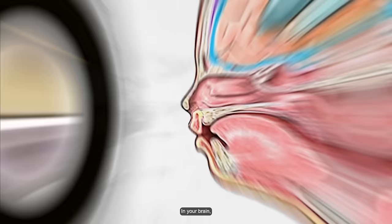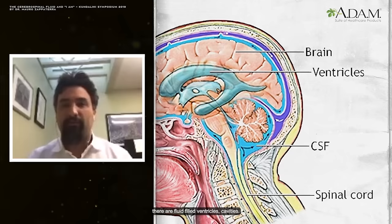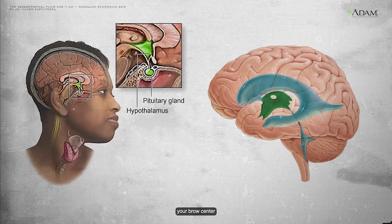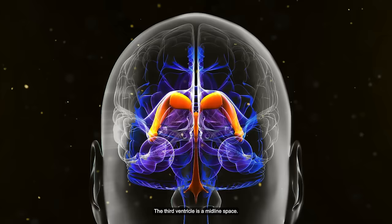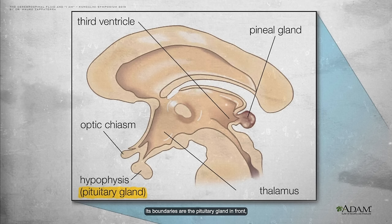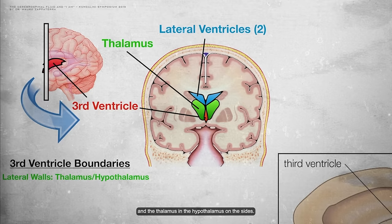In your brain, there are fluid-filled ventricles — cavities. At the center of your brain, at the same location of your third eye, your brow center, there is a cavity called the third ventricle. The third ventricle is a midline space. Its boundaries are the pituitary gland in front, the pineal gland in back, and the thalamus and the hypothalamus on the sides.